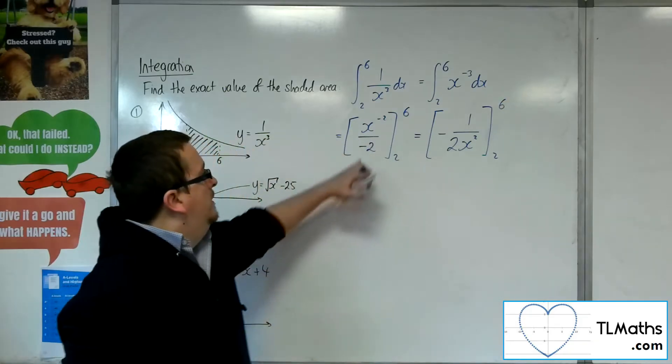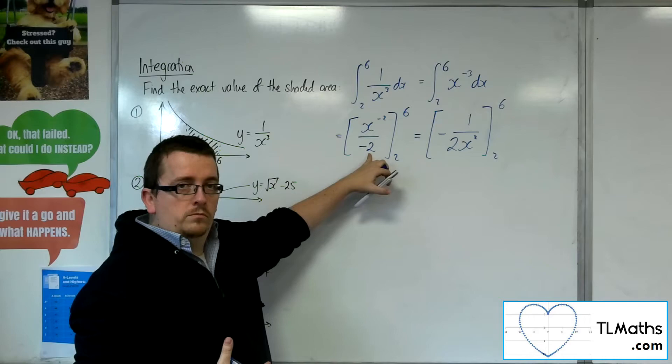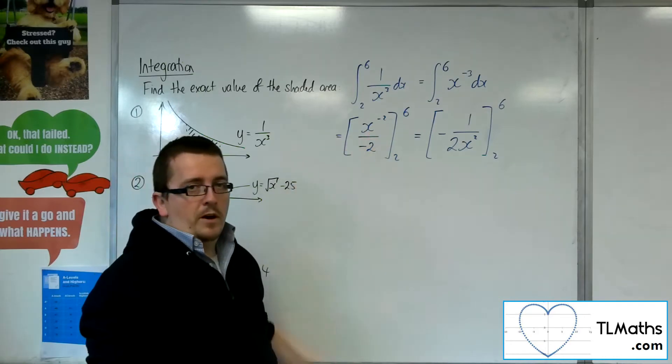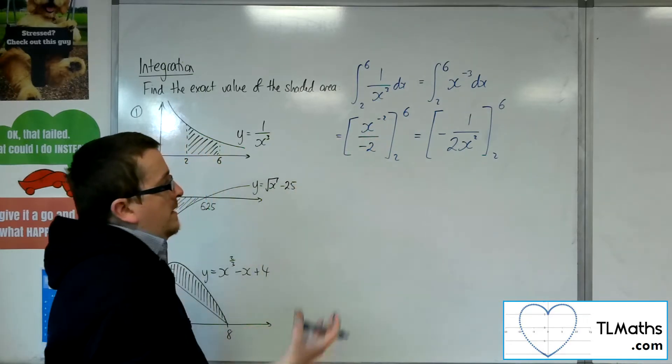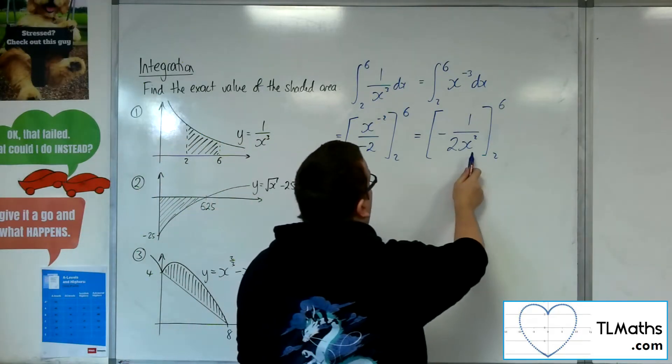So that, if you can see, is minus 1 over 2 times x to the minus 2, which is 1 over x squared. So you can rewrite it in that format.